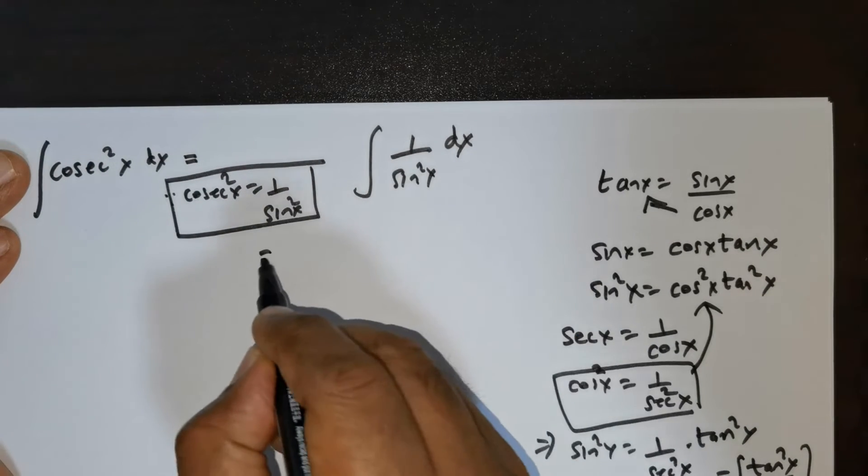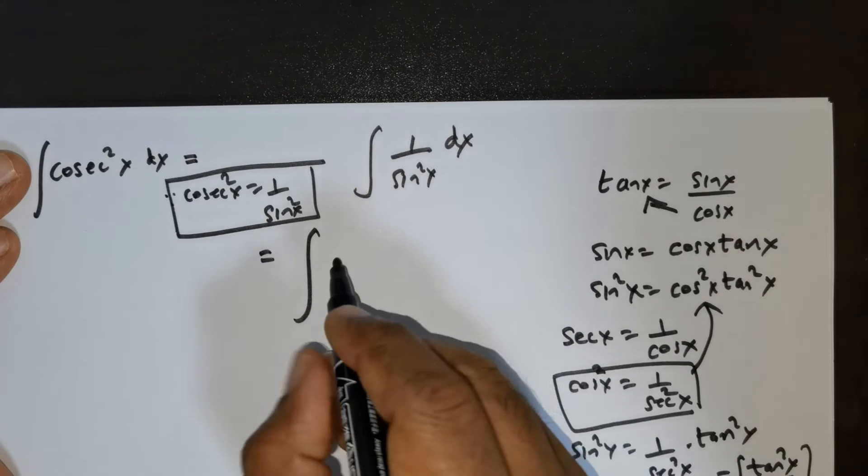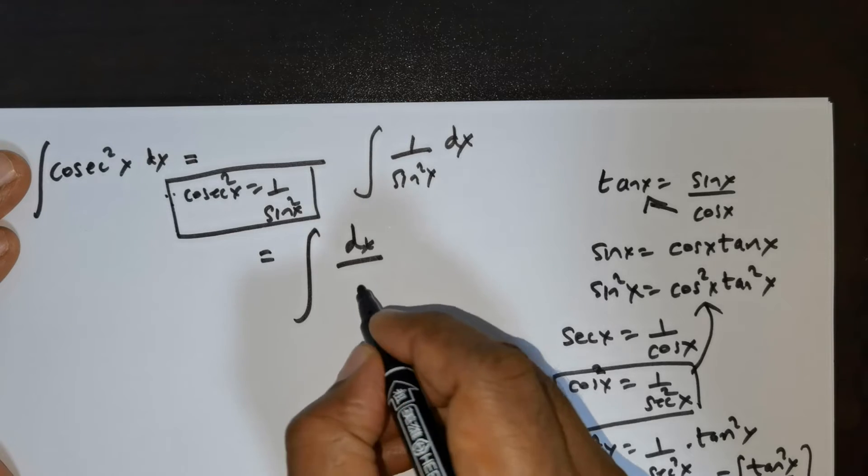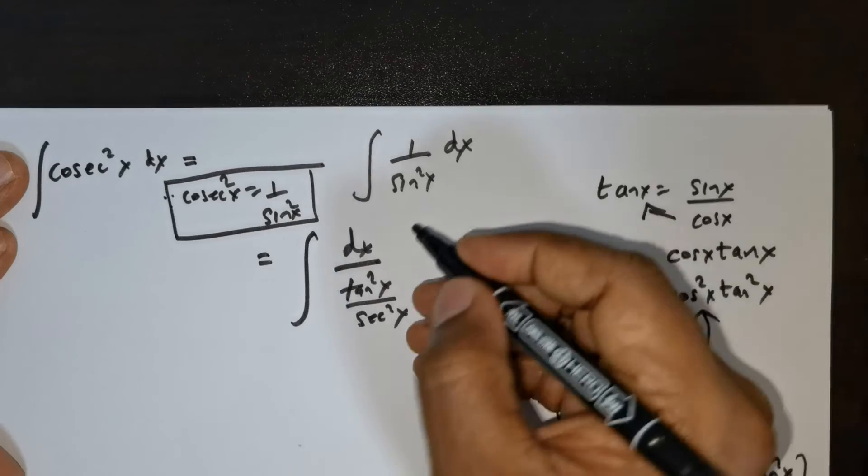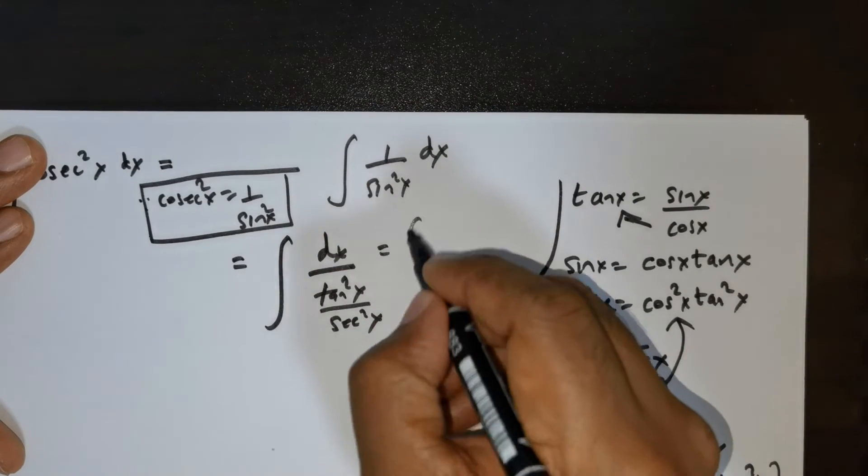So this is equal to the integral: in place of sine squared x I would be substituting tan squared x divided by secant squared x. So you flip it; this is going to give you integral secant squared x over tan squared x times dx.